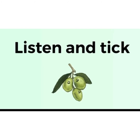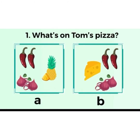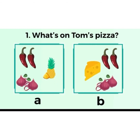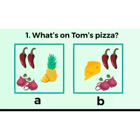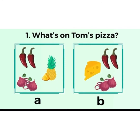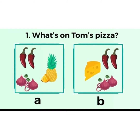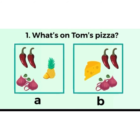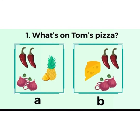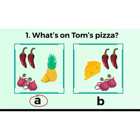Activity 1 — listen and tick. Question 1: What's on Tom's pizza? Dialogue: 'I can smell pizza.' 'Yes, it's my pizza.' 'Are there peppers on your pizza?' 'Yes, there are. There are onions too.' 'Yuck, I don't like onions.' 'And what are those yellow things on your pizza?' 'Oh, that's pineapple.' 'Pineapple on the pizza? That's disgusting!' Once finished, choose either A or B.